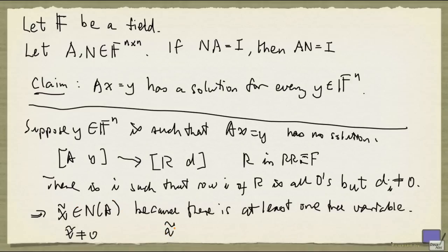But now, we know that x tilde is I times x tilde, and that's N times A times x tilde. And by associativity of matrix multiplication, I can rewrite this as this.